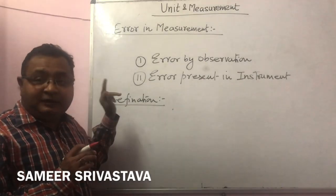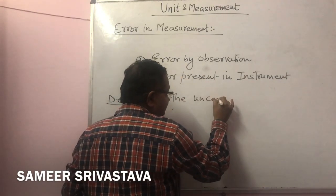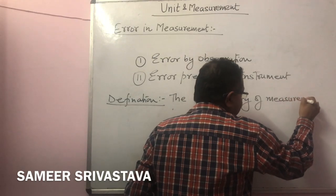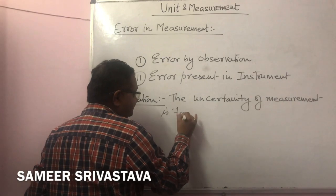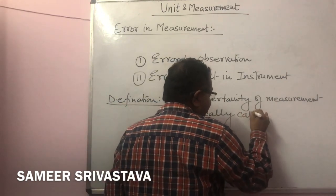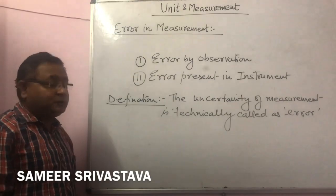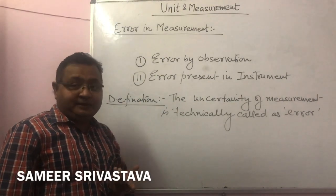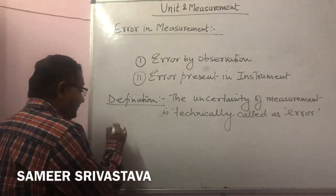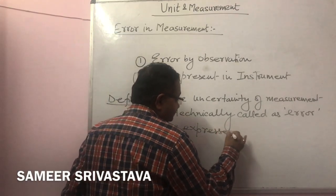If we want to define error, we can write: the uncertainty of measurement is technically called as Error. We define the error as it is an uncertain case of measurement. And always remember, error is expressed in percentage.